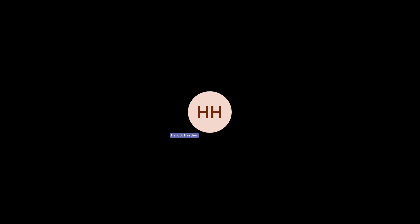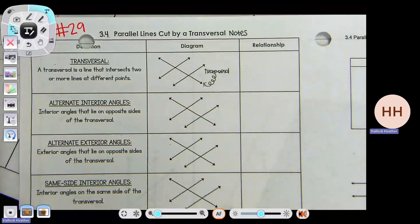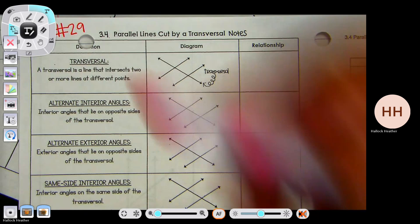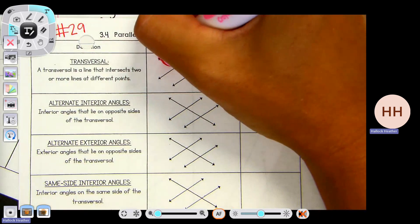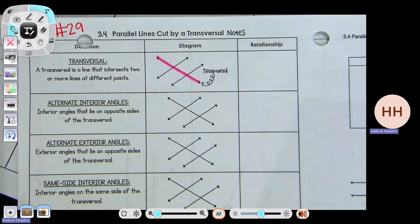Parallel lines run parallel to each other, meaning they never cross. Now we're going to take our parallel lines and slice them with a transversal. Take one of your colored pens or markers — I'm going to draw over the transversal. Then with your pencil, we are going to make our transversal and our parallel lines into a sandwich.